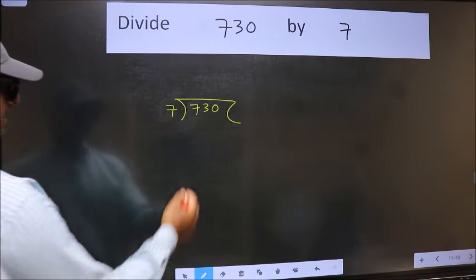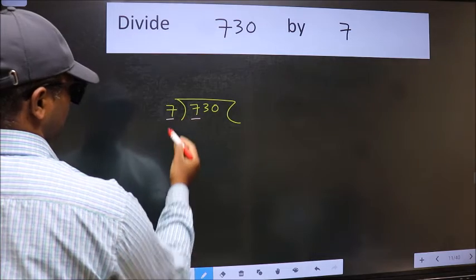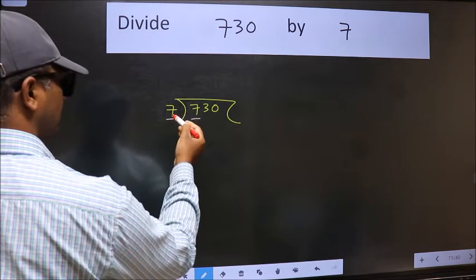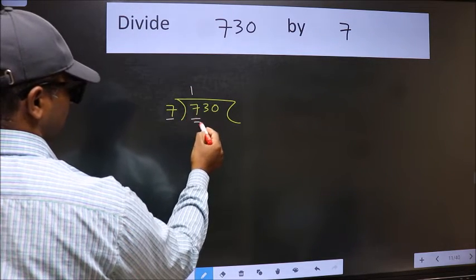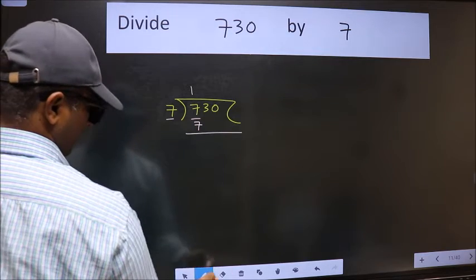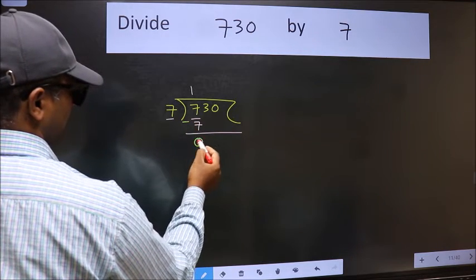Next, here we have 7 and here 7. When do we get 7 in 7 table? 7 once 7. Now we should subtract. We get 0.